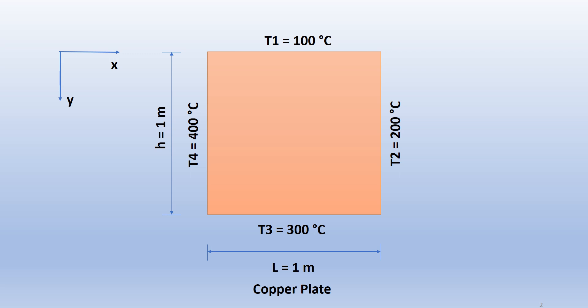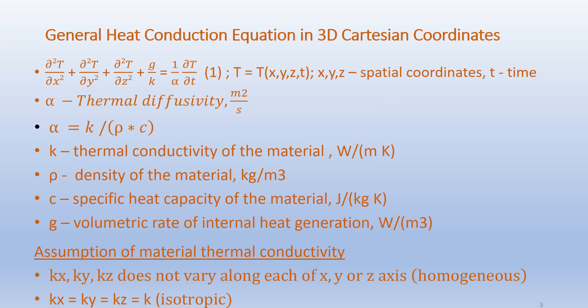Our interest is to find the temperature profile inside the copper plate at various locations. The general heat conduction equation in 3D Cartesian coordinates is given as: ∂²T/∂x² + ∂²T/∂y² + ∂²T/∂z² + G/k = (1/α)(∂T/∂t), where the uppercase T represents the temperature and it is a function of the spatial coordinates x, y, z and time t.